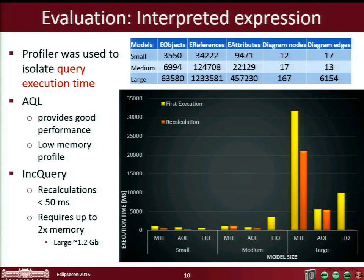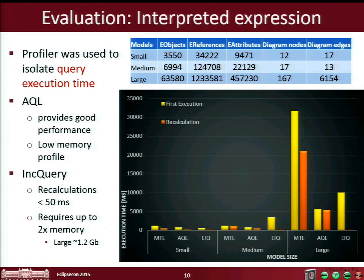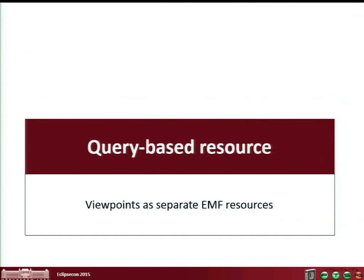What we are always telling everybody is that the case where Inquiry is really good is recalculations. Because it is incremental, it caches all the information, and after the first load — which is larger than the case of AQL — recalculations are around 50 milliseconds. Nothing comes for free: you have to pay in memory, because caching is memory-intensive. AQL does, in this complicated case, three to four times better than MTL. We do not know exactly why, but re-executing MTL takes longer the first time. For AQL there is minimal difference between first and subsequent executions, so it works out of the box.